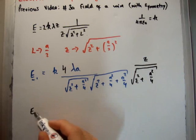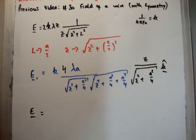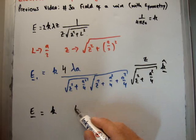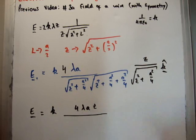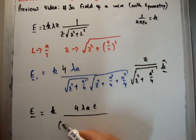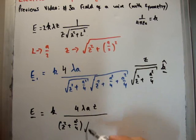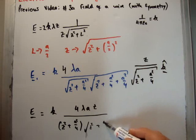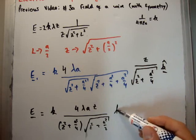Putting it all together, the total electric field, oh by the way it's in the k-hat direction. The total electric field then is going to be k, which is one over four pi epsilon zero, times four lambda az, divided by z squared plus a squared over four. And we also have the square root of z squared plus a squared over two. And this, like I said, is in the k-hat direction.